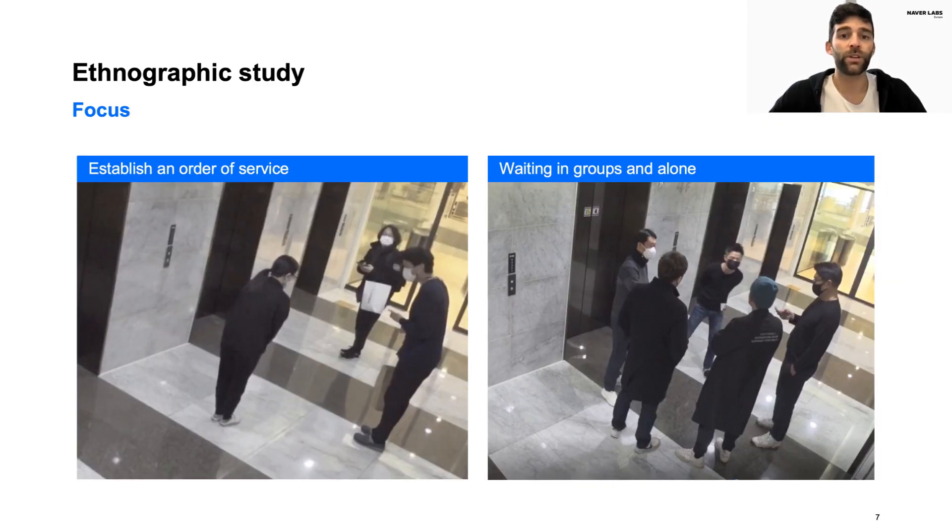Their focus was mostly on two points: the strategies used to establish the order of service, for example, in the first image we see how two people gave priority to a third person using a bow, and how people wait alone or in groups. For example, on the second image we see a group of people waiting for another member before entering the elevator.